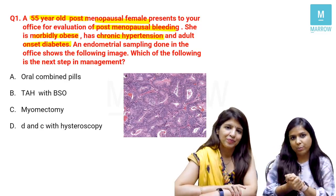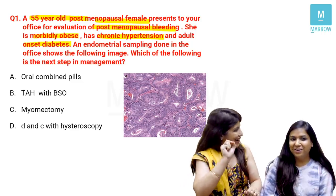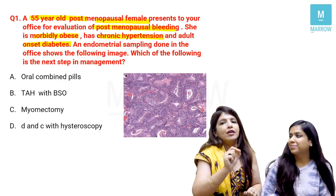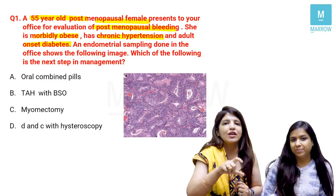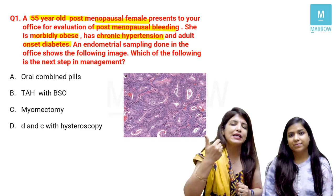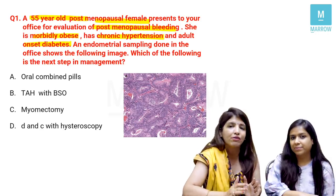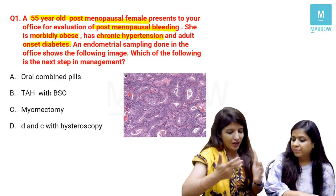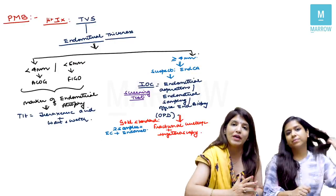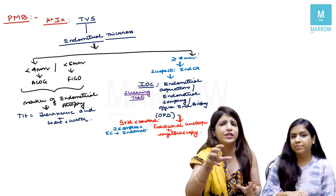When reading long-stem questions, highlight the important keywords at the very moment you read them. This patient has post-menopausal bleeding, hypertension, diabetes, and obesity — this is called corpus cancer syndrome, and these females are at high risk for endometrial cancer. The first investigation to do is transvaginal ultrasonography to assess endometrial thickness and detect any focal lesion.